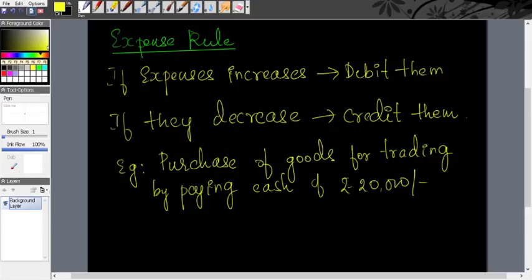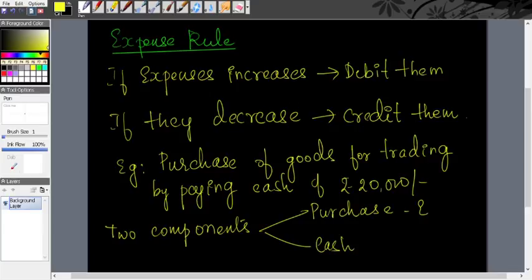If it purchases by paying cash, the two components in this transaction would be purchase of goods, which is an expenditure, and payment of cash, which is an asset.